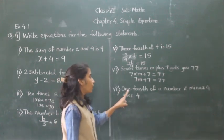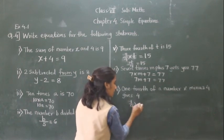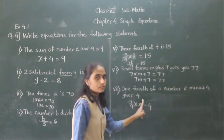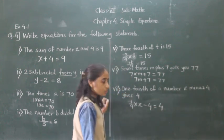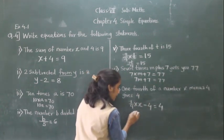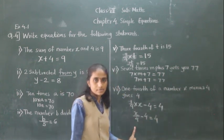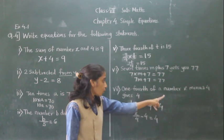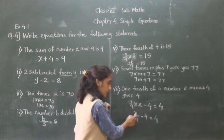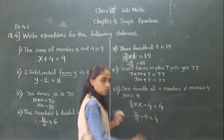Next: one-fourth of a number x minus 4 gives 4. 'One-fourth of' means multiplication, so x upon 4 minus 4 is equal to 4.